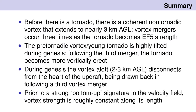Let me summarize. Before there's a tornado, there's a vortex — not very strong, but it connects up to three kilometers or so and grows in an interesting way along the vortex length. It's a very highly tilted vortex during genesis. Following the third of three mergers, it becomes very much vertically oriented. During genesis, the vortex aloft disconnects from the heart of the updraft and is then drawn back in following a vortex merger. The vortex strength grows pretty much the same along its length in the bottom two kilometers until a very strong bottom-up signature occurs in the velocity field that brings on the EF5 portion of the tornado.